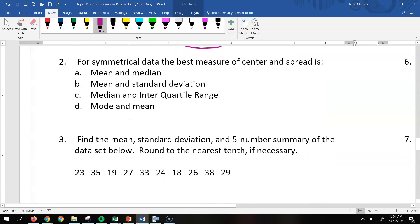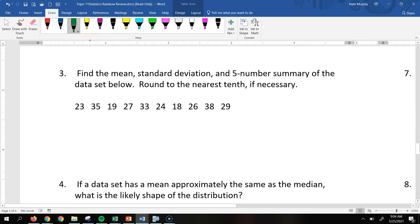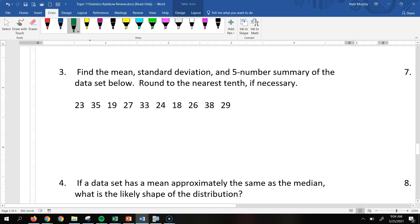So if it is symmetrical data, the best measure of center and spread would be the mean and the standard deviation. So remember that from your notes. Now, here we're actually going to find the mean, the standard deviation, and the five-number summary of the data set below. Round your answer to the nearest tenth if necessary. So for that, we're going to use our calculators.